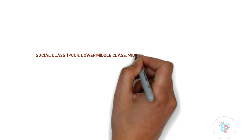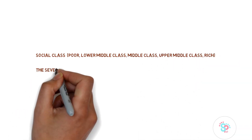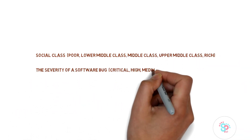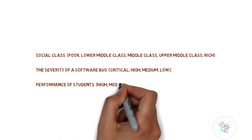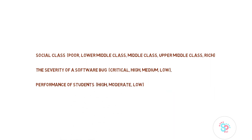For instance, look at these examples. Social class — the categories are poor, lower middle class, middle class, upper middle class, rich. The severity of a software bug — critical, high, medium, low. Performance of students — high, moderate, low. You can notice that the categories here have a specific order; they are ranked. The categories are ordered either from low to high or high to low, but anyhow there is a specific order to them.